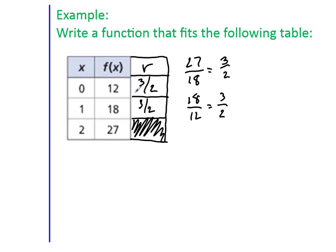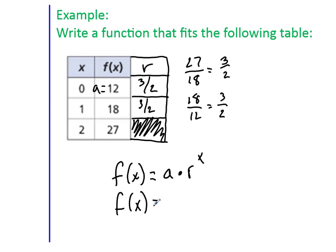If the rate and the direction of the outputs don't match up, go back and check your division to make sure you're dividing in the right order. Now, the initial output occurs where the input is zero — that number is 12. So f(x) = 12 · (3/2)ˣ. Always put fractions in parentheses when writing your function.